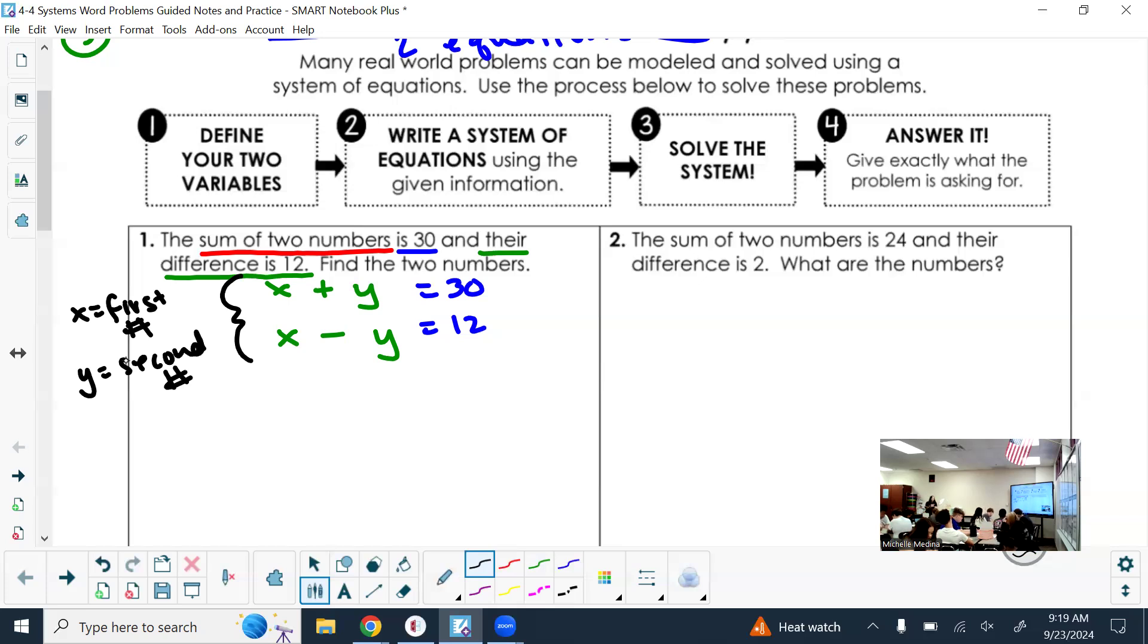In part B on your practice test, it says to solve by graphing. For your practice test and real test, you have to solve it with the method they say. If you have no clue how to do that method, try another one - at least you'll get some points, but not full points. On this paper, it doesn't say you have to use a certain method. What method do you guys think would be easiest to solve this one?